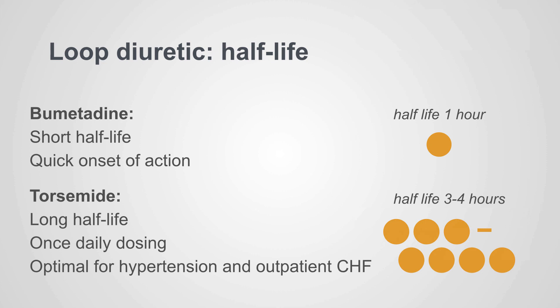Moving on to half-life: furosemide has a half-life of one and a half to two hours. Bumetanide is quicker with a half-life of one hour, meaning very quick onset of action — you give the drug and immediately see a response, which is useful in the ICU. Torsemide is on the other end with a long half-life of three to four hours, allowing once-daily dosing, making it optimal for hypertension and heart failure. Clinical studies have shown you can decrease hospitalization with the only change being switching patients from furosemide to torsemide — a reduction in hospitalization for heart failure and all causes.